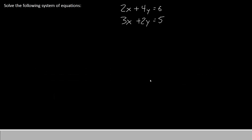Our system of equations contains both x and y. Our first equation is 2x plus 4y equals 6. Our second equation is 3x plus 2y equals 5.